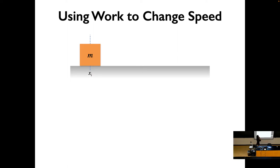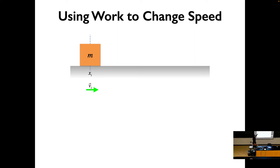So let's talk about using work to change speed. This is something we've basically already talked about. If you have a force — work has to do with force — what does changing speed mean in physics? Acceleration. So you apply a force, you get an acceleration. Remember, work is just force and displacement, so if you have a force and a displacement, your speed is changing because you're going to have an acceleration.